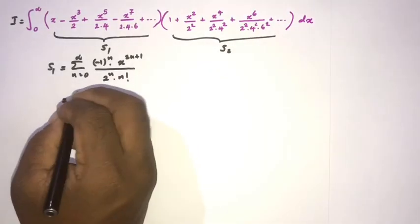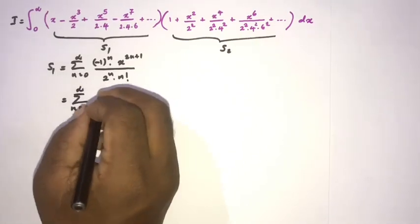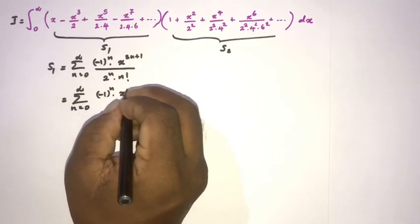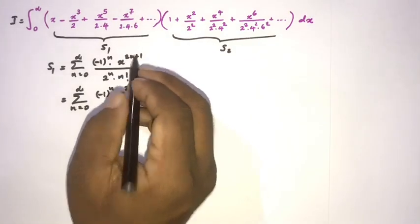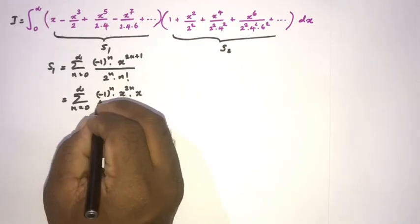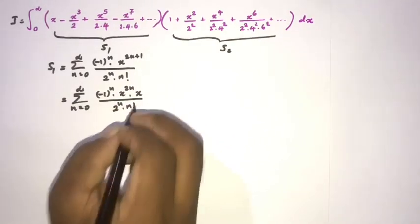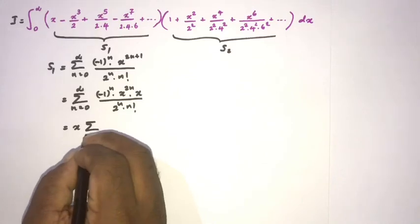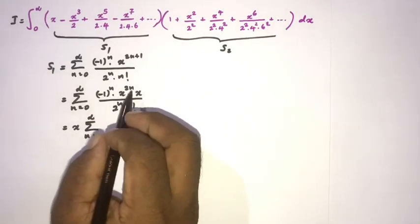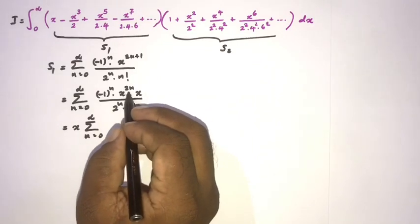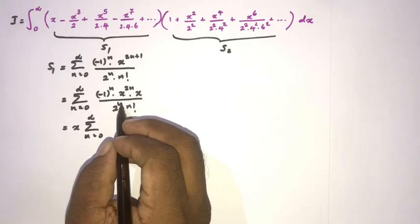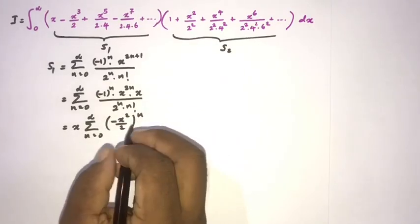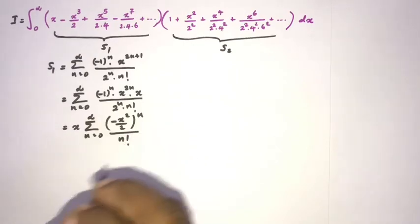Simplifying, we write the sum from 0 to infinity of (-1)^n times x^(2n) times x, over 2^n times n factorial. We pull the x outside the sigma notation, and x^(2n) can be written as (x²)^n. So we get x times the sum of (-x²/2)^n over n factorial.